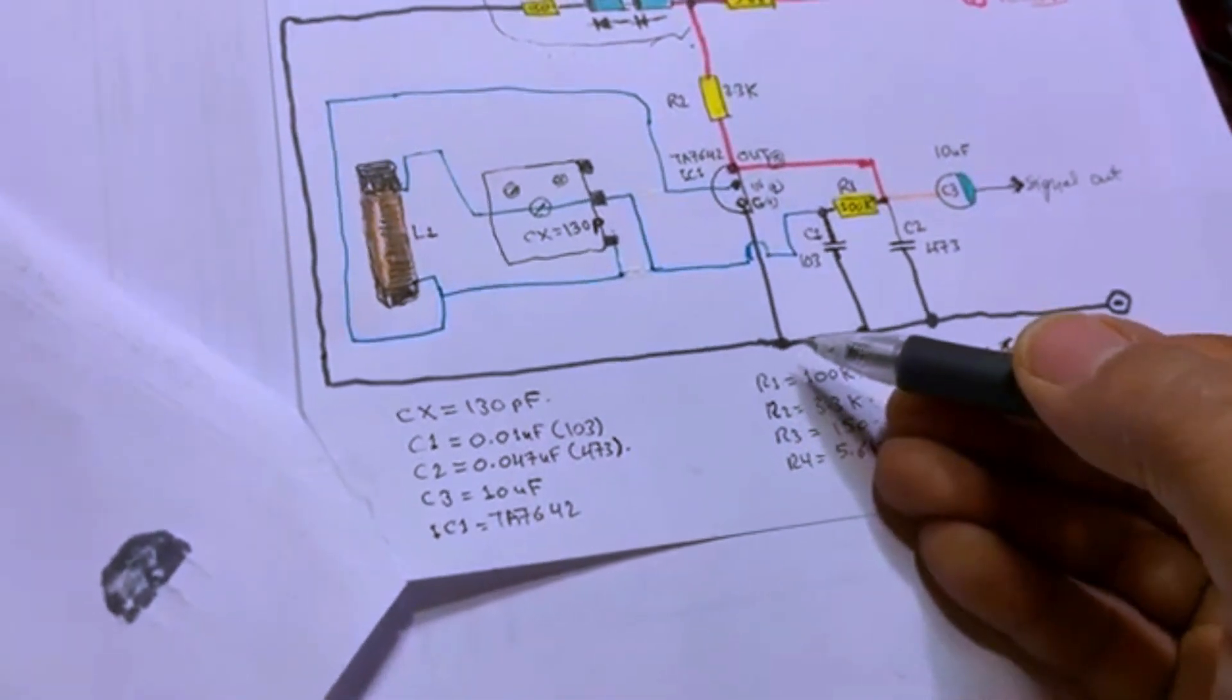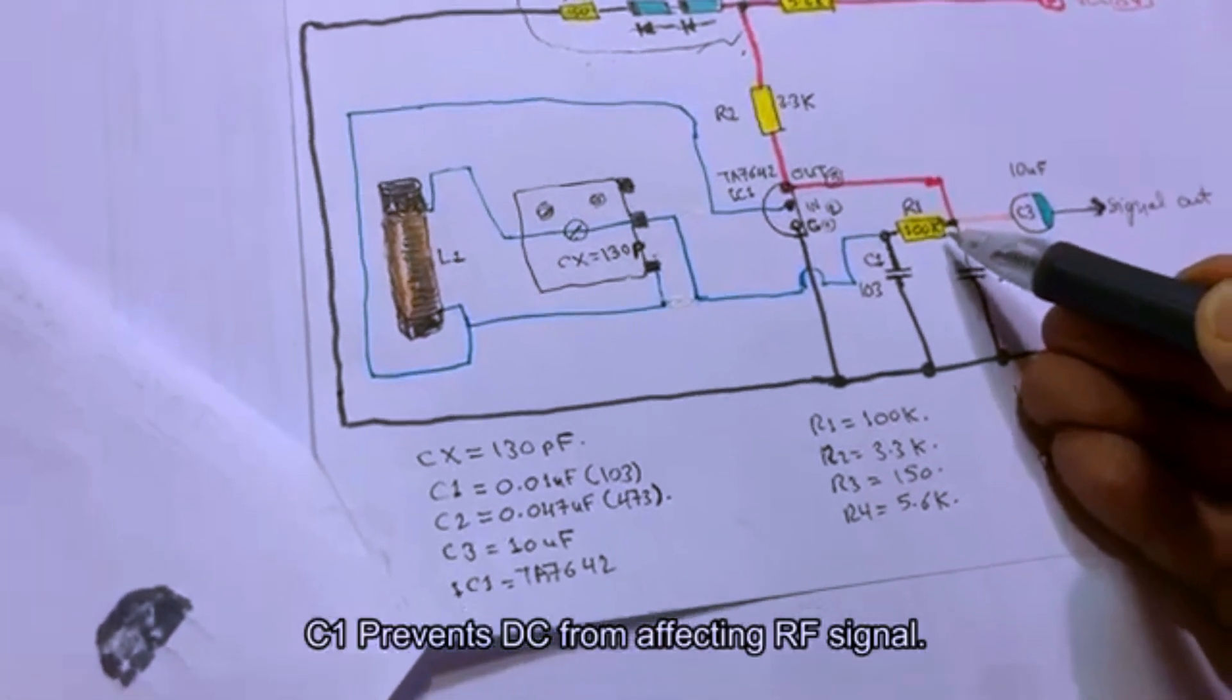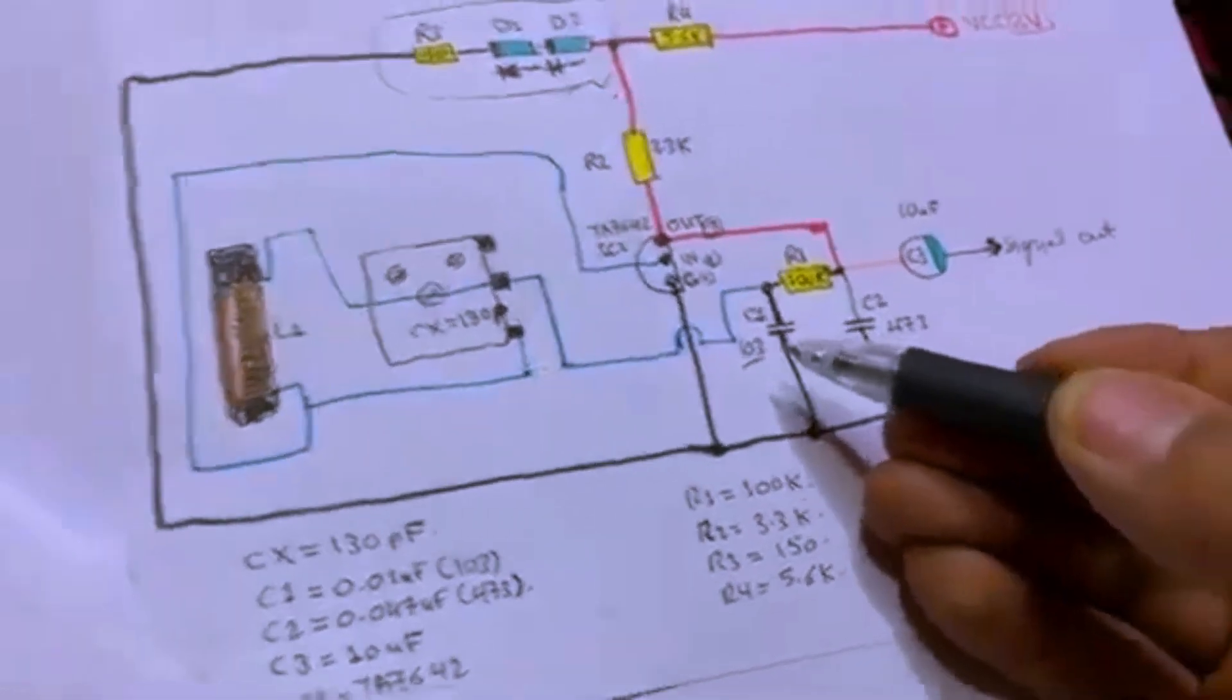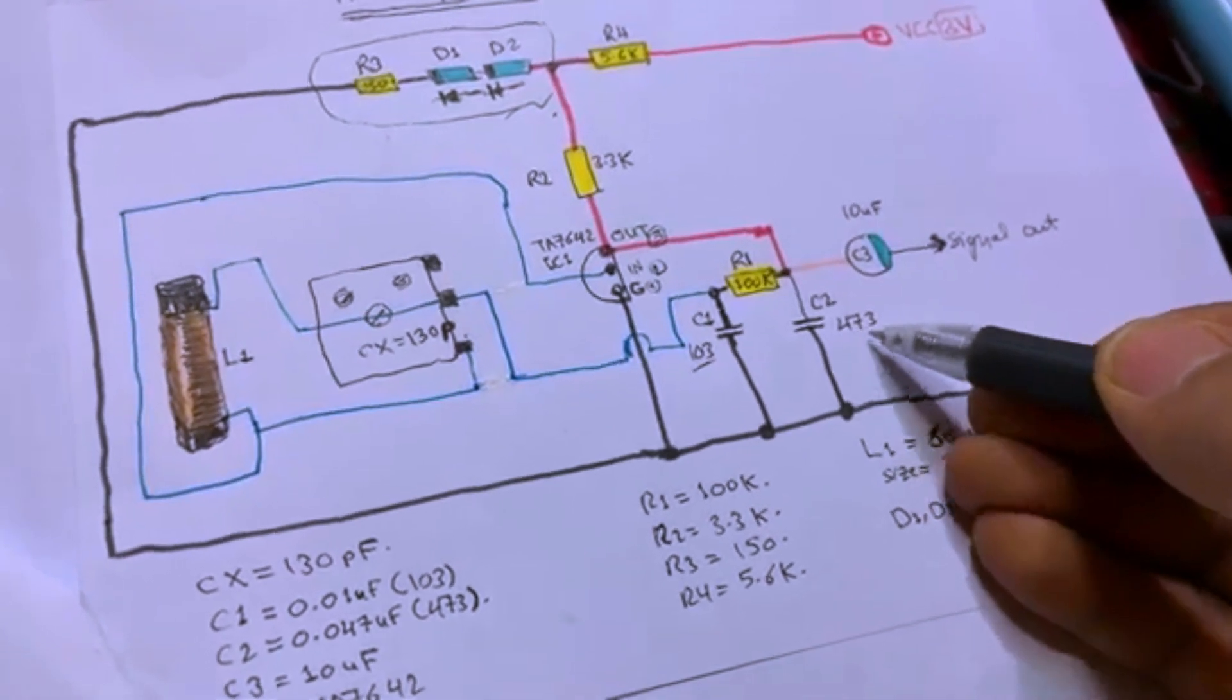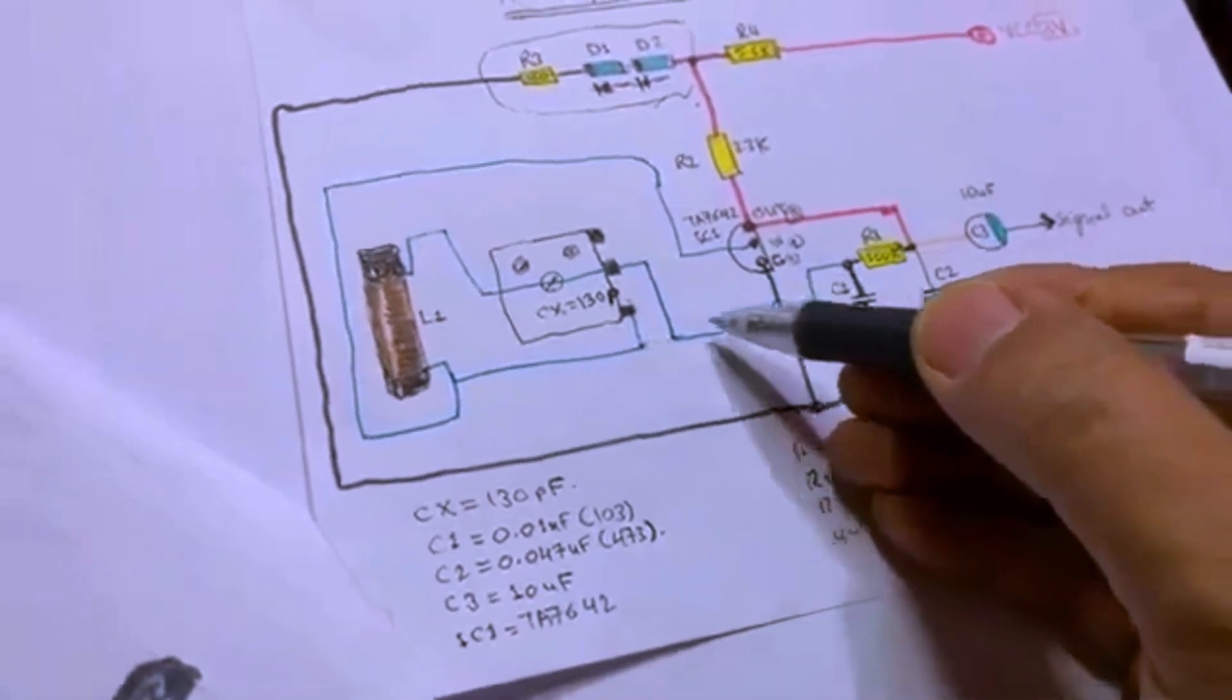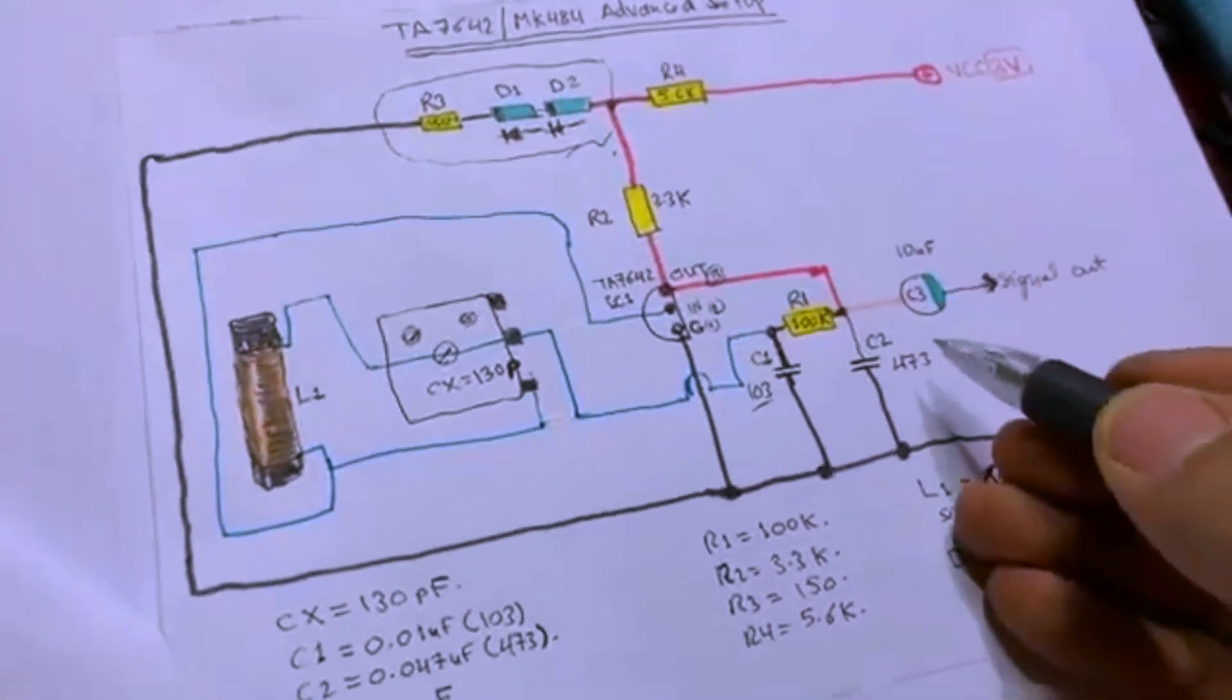Now you come to the output. You bring a wire to here connected to 100 kilo ohms and with two capacitors C2 and C1. C1 is 0.01 microfarad which is coded as 103, and C2 is 0.047 microfarad which is coded 473. You connect them all to the negative rail, you connect ground to negative rail. You can put it here and connect from here, it's okay. From here you will get the signal out.